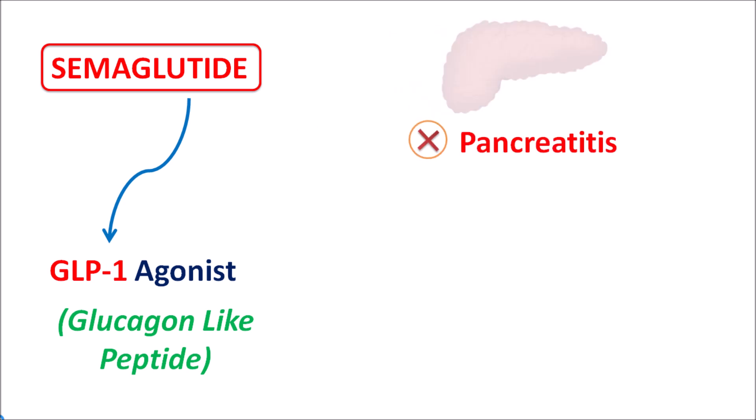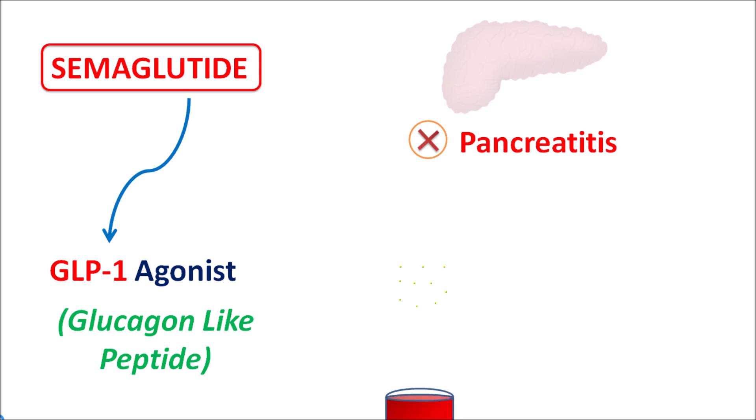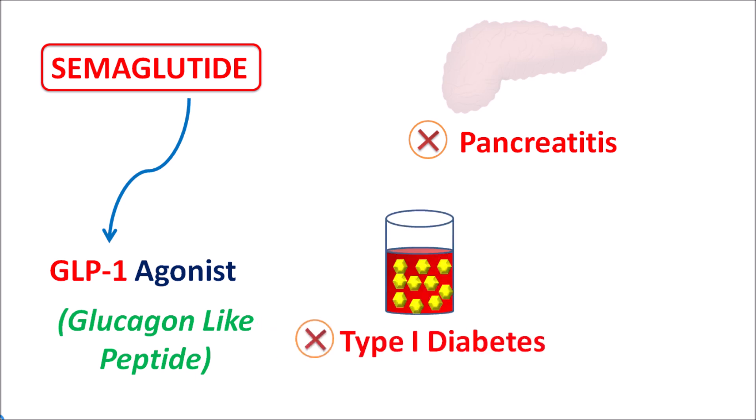Semaglutide should not be given to patients with pancreatitis, as it can produce pancreatitis as a side effect. It is not indicated in patients with any history of pancreatitis. Similarly, this drug is not useful in the treatment of type 1 diabetes, which is associated with insulin deficiency. Semaglutide is not a first-line therapy for diabetes mellitus — it can be combined with other drugs to produce efficient glucose control. It is available as an oral tablet, which improves patient compliance.